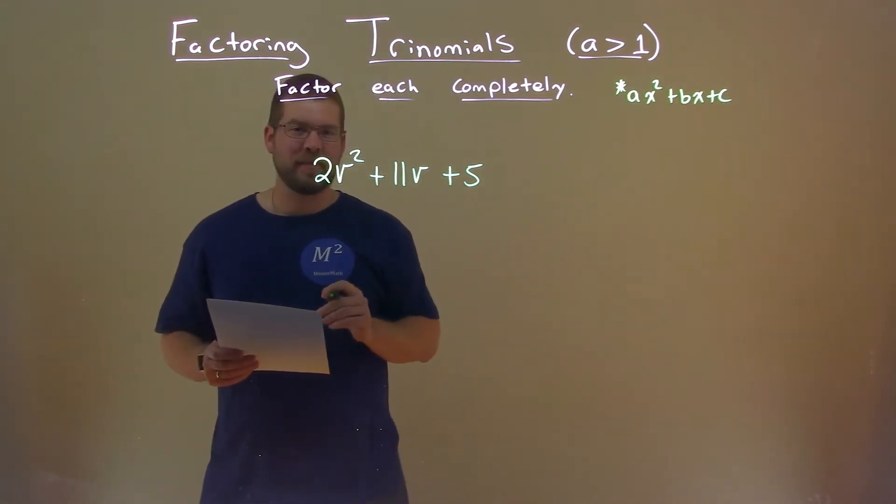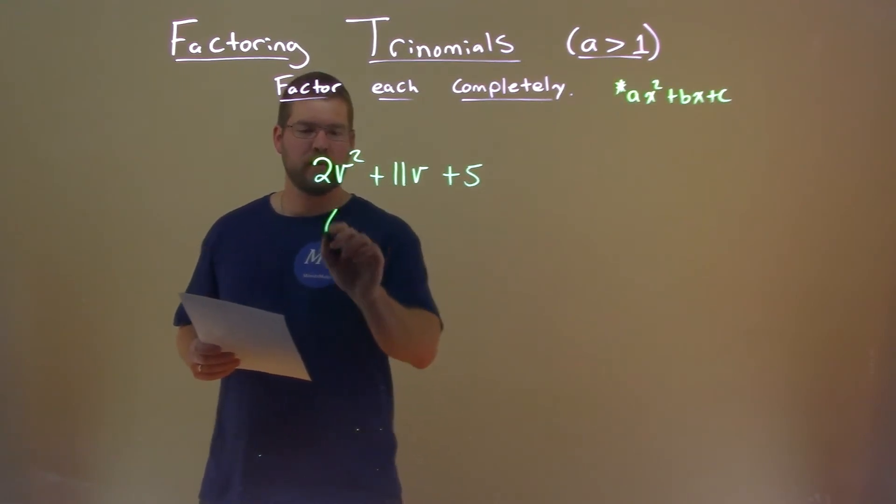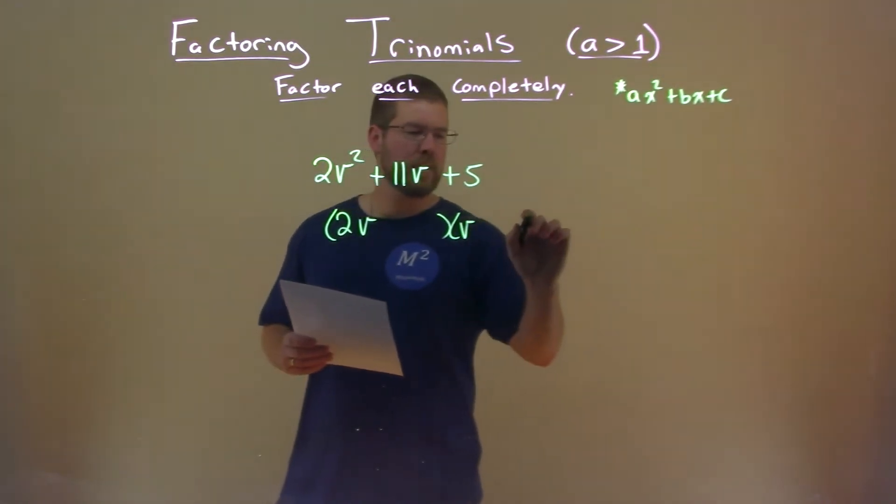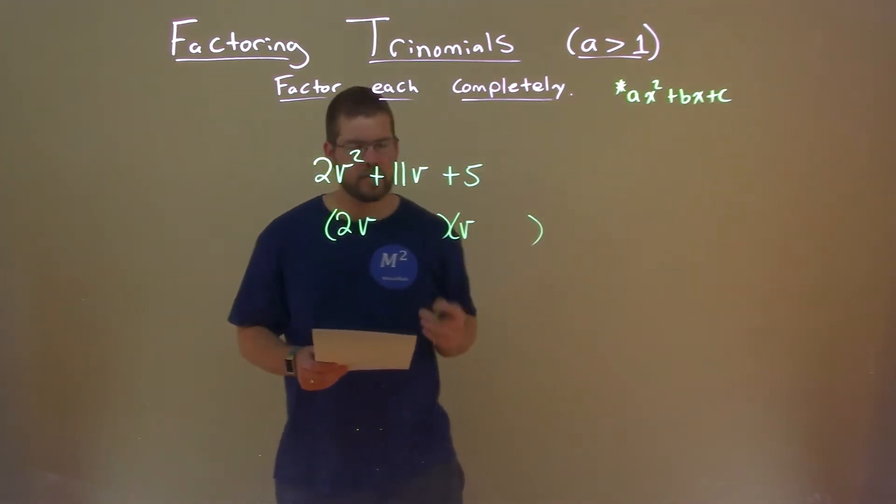We'll look at the a value. A value is 2, a prime number. So we know it's going to be in some form of 2v plus something times v plus something else or minus something else, right?